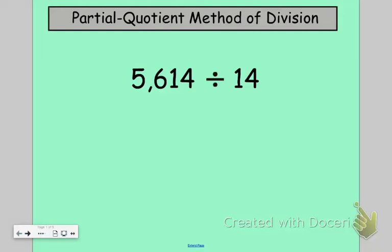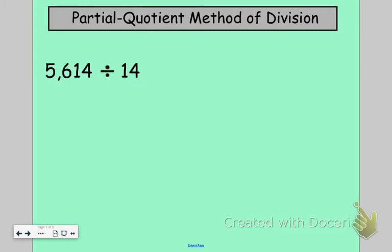This video is going to show you how to use the partial quotient method of division to divide 5,614 divided by 14. We can see that they have given us 5,614 as the dividend and 14 as the divisor.